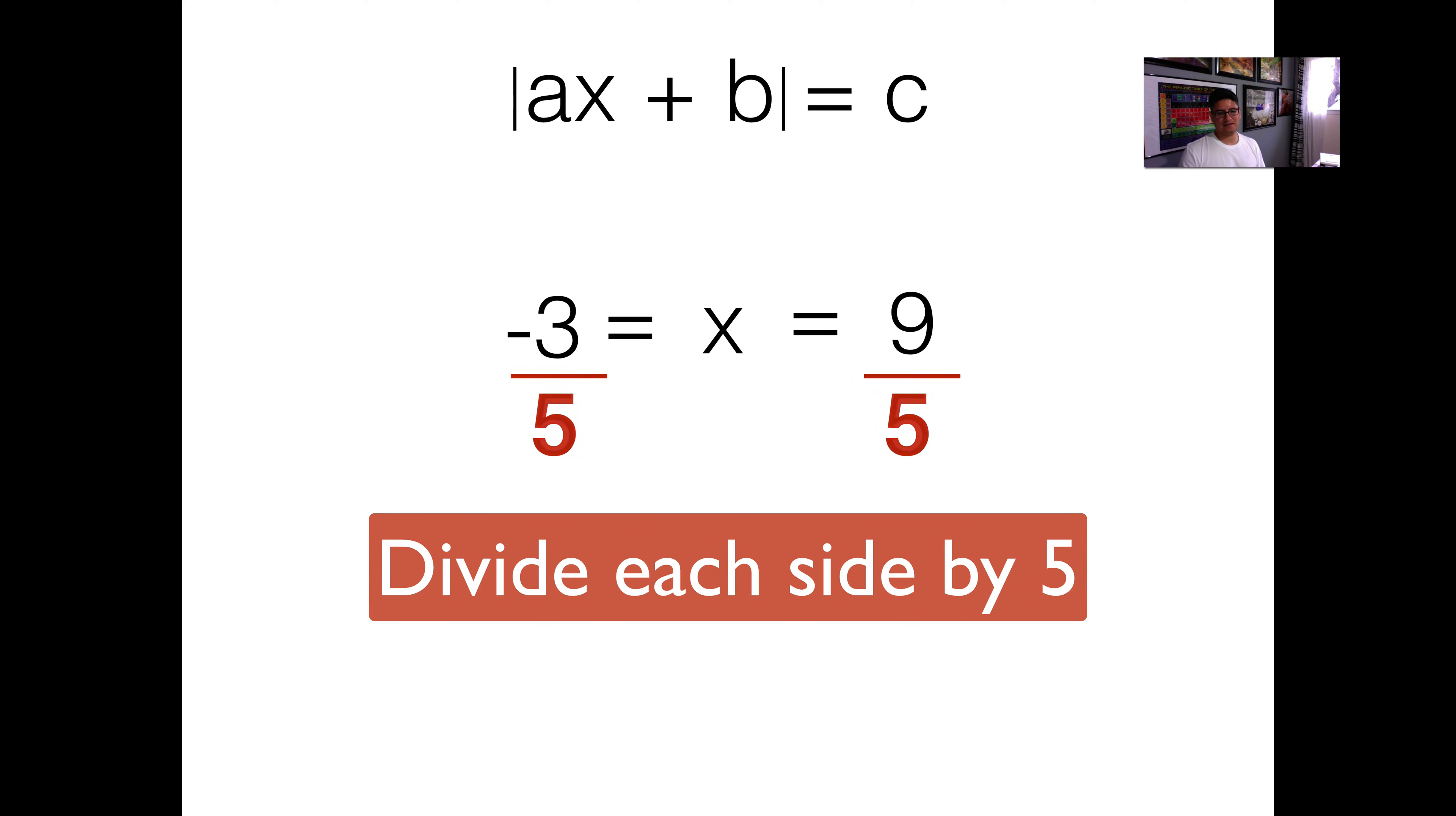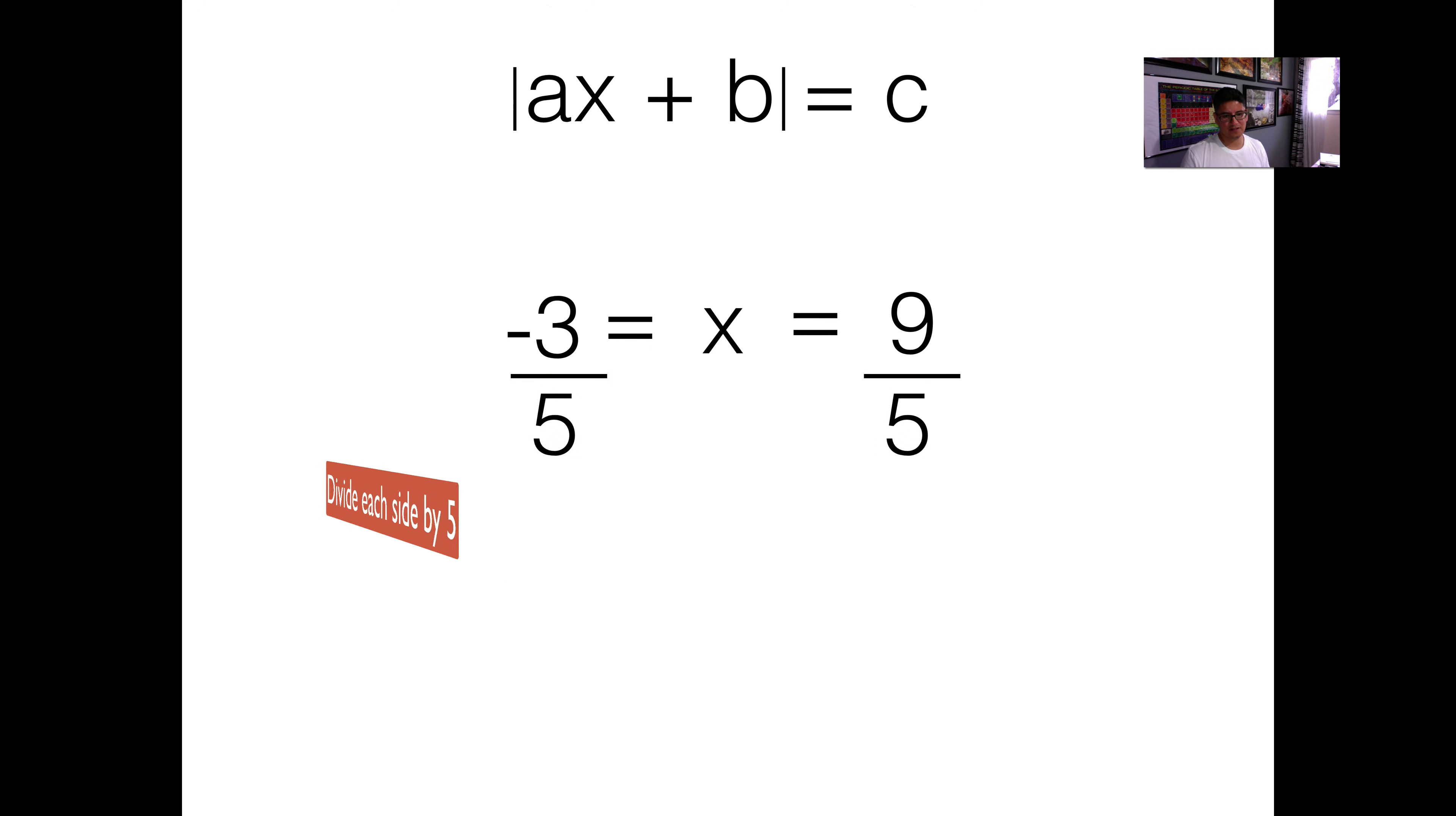I've isolated x, and this is my final answer. So x can equal either negative 3 over 5 or 9 over 5, which in decimal form would be negative 0.6 or 1.8.